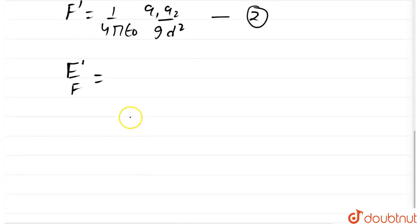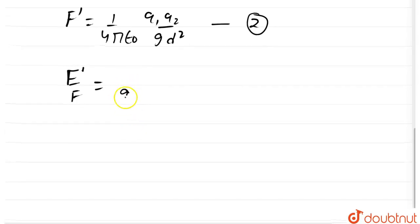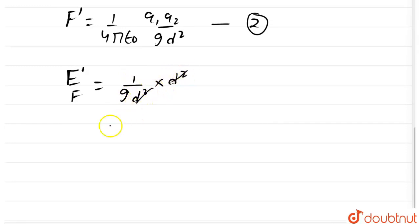So we are left with 9 d square and d square. So d square d square will also get cancelled out. Now f dash is equal to f divided by 9. This is our initial force.